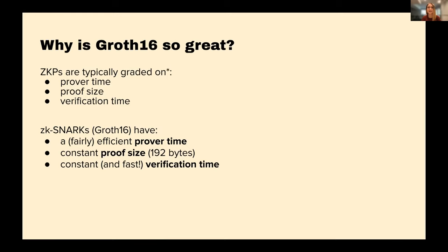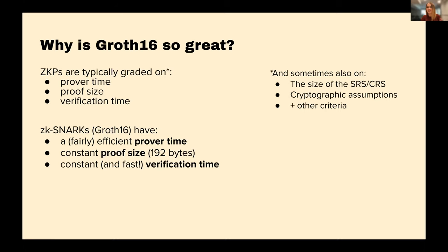Groth16 is probably still considered the standard today. Zero knowledge proofs are typically graded on three things: prover time — how long it takes to generate the proof; proof size — how physically large the proof is; and verification time. For Groth16, the prover time is pretty good, the proof size is constant and super small, and the verification time is also constant and really fast. By a lot of metrics it's still actually relatively unbeatable, even though different proof systems have beaten it on specific metrics.